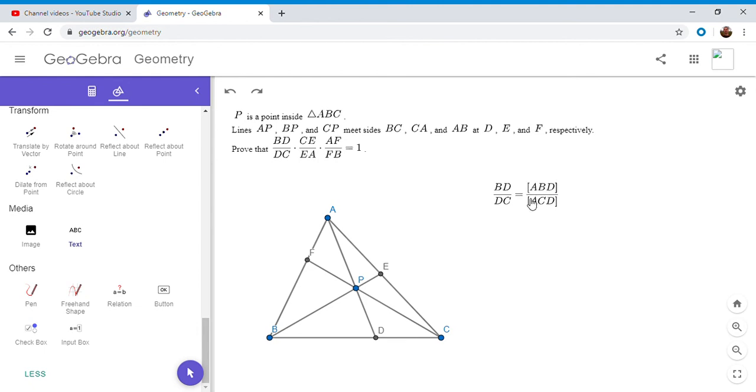And I've used these brackets to denote area. And I'm going to do that in all my future videos. I feel like it's generally a very convenient notation. So BD over DC is area of ABD over area of ACD.